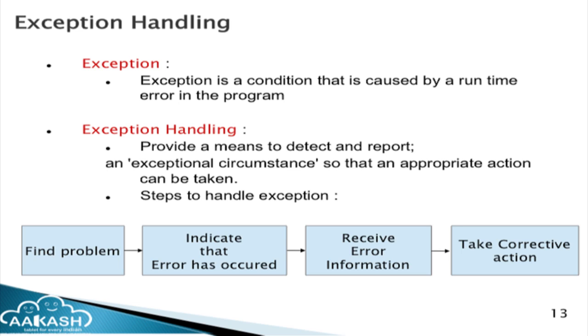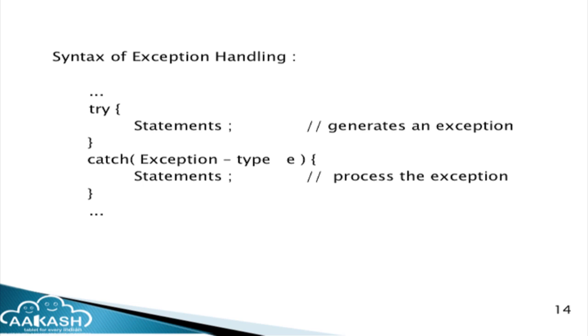What is an exception? An exception is a condition caused by a run-time error in the program or due to wrong logic. Exception handling provides a means to detect and report exceptional circumstances so appropriate action can be taken. Steps to handle an exception: find the problem, indicate that an error has occurred, receive the error information, and take corrective action. The syntax uses a try block and a catch block — whatever error occurs in the try block generates an exception which the catch block catches and handles.